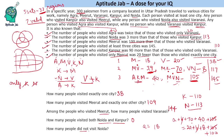How many people did not visit Noida? First, Noida visitors total 113. With 300 total people, those who did not visit Noida are 300 minus 113 equals 187. This was the solution to the set and the answers to the questions. I hope you loved solving this set. Please don't forget to like this video. Thank you.